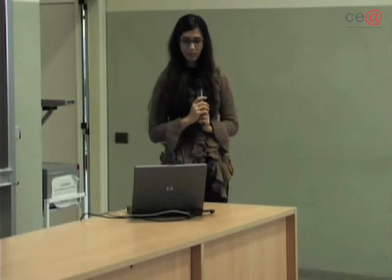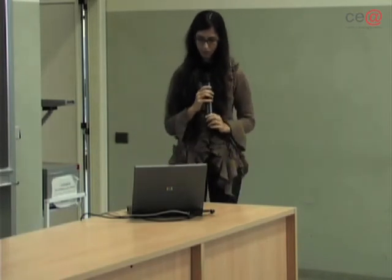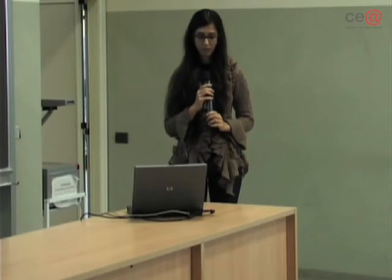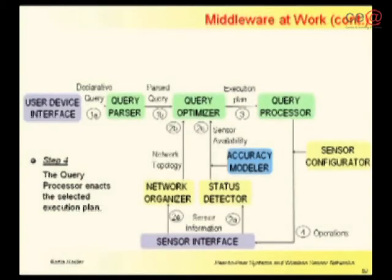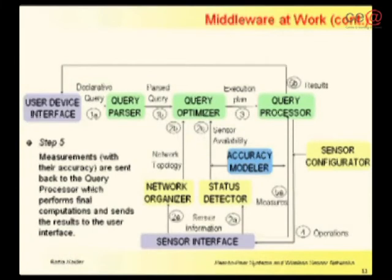In step three, different execution plans are produced and sorted according to temporal and energetic efficiencies; the best one is sent to the query processor. In step four, the query processor enacts the selected execution plan. As a last step, in step five, measurements with accuracy are sent back to the query processor, which performs the final computation and sends the result back to the user.